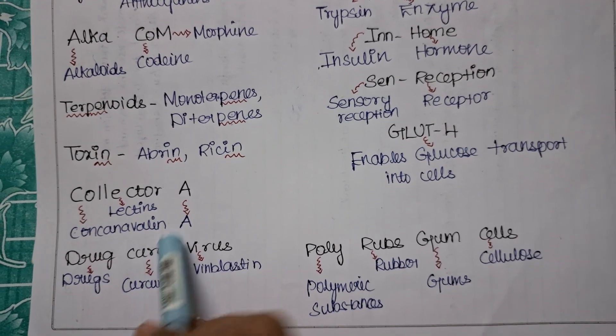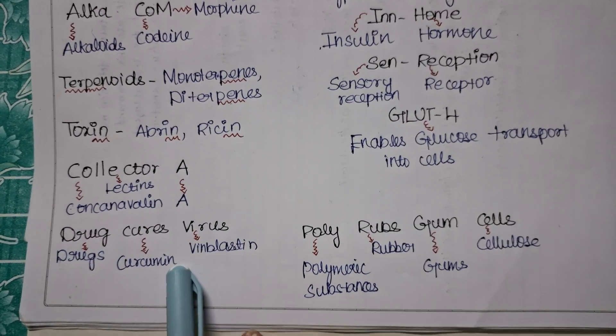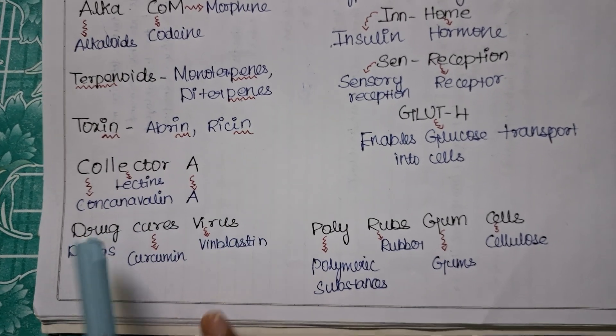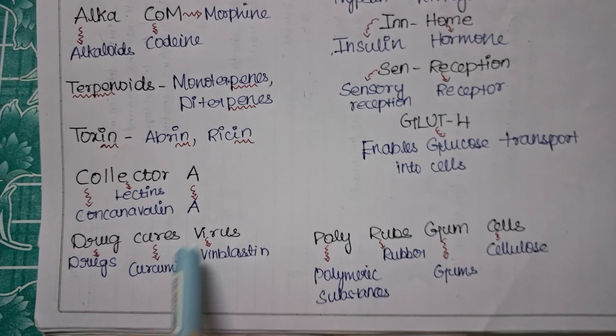This C-O is starting with your concanavalin. L-E-C - lectins. A is for A, that is your concanavalin A is the example for your lectins. So that is your example. Now the next one is for the drugs.